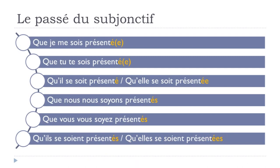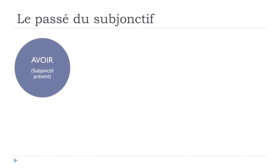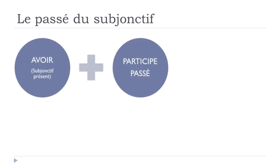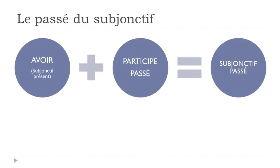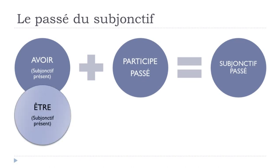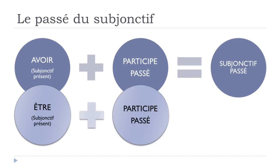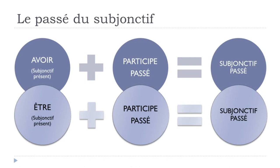To summarize: to construct the passé du subjonctif, first put avoir at the subjonctif présent, then your participe passé, and you get your subjonctif passé. For exceptions — être verbs and reflexive verbs — use être at the subjonctif présent, then the participe passé, and you get your subjonctif passé form.